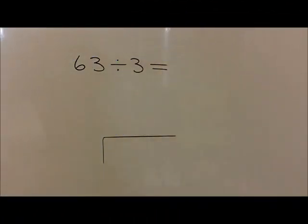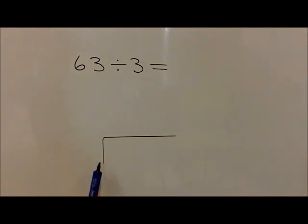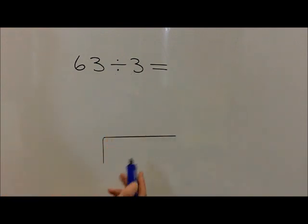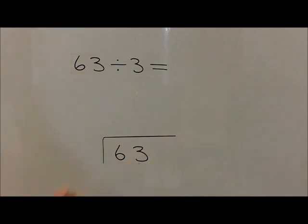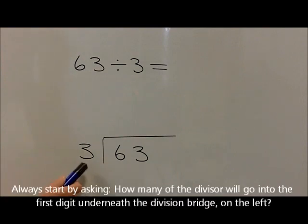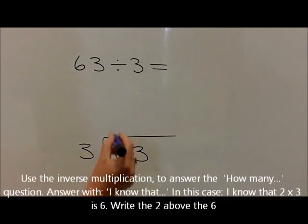Once children are confident to move on to short division, they use the method with the division bus stop or the division bridge. For example, with the question 63 divided by 3, we write the 63 underneath the bridge or bus stop and then the dividing by 3 at the left hand side. We then ask the question how many 3's are in 6, and by using the inverse multiplication they should know that 2 threes are 6.